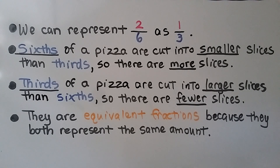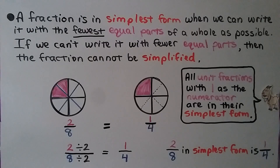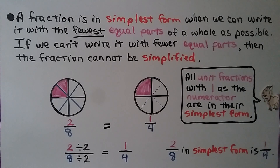They are equivalent fractions because they both represent the same amount. A fraction is in its simplest form when we can write it with the fewest equal parts of a whole as possible. If we can't write it with fewer parts, then the fraction cannot be simplified.